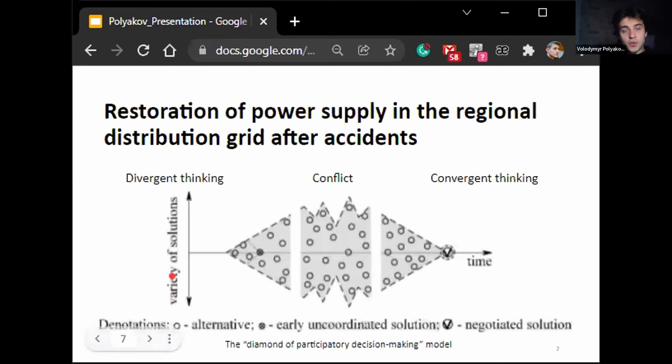The method that can be used for such task solving can be described with the diamond of participatory decision making. According to this model, the problem solving process in the intelligent multi-agent system goes through three stages which correspond to agent thinking style: divergent thinking, conflict, and convergent thinking. At the stage of divergent thinking, the expert agents generate a variety of problem solutions and the agent facilitator, which acts like a manager between agents, simulates their development by appropriate methods. For example, brainstorming, misleading questions, brainwriting, challenging restrictions and lateral thinking.